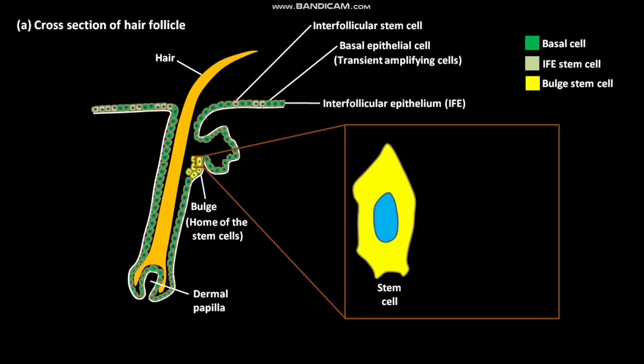Also, these transient amplifying cells cannot generate stem cells. In this video, only the basal layer of epithelial cells adjacent to the basement membrane are shown. Outside of the follicle, several layers of differentiating keratinocytes are overlaying the dark green colored basal cells. Keratinocytes are skin cells.